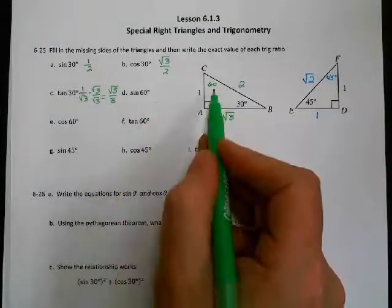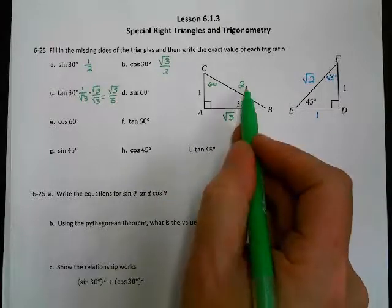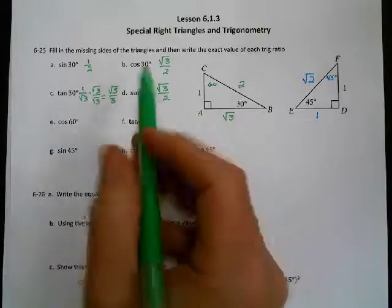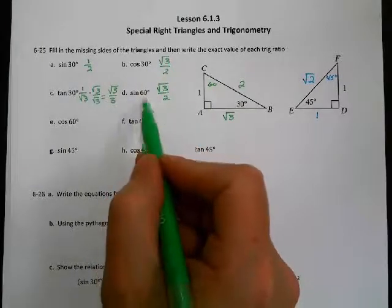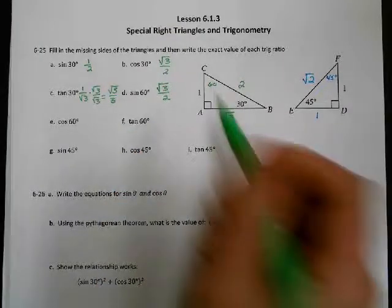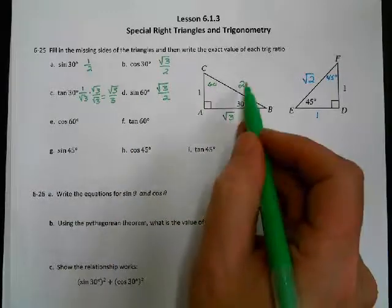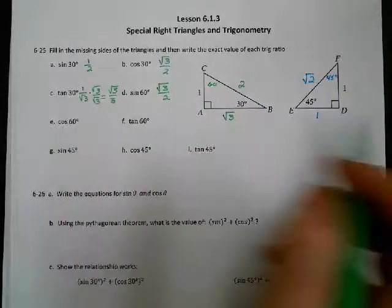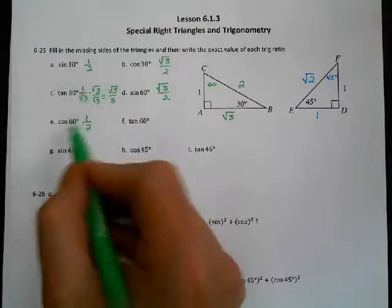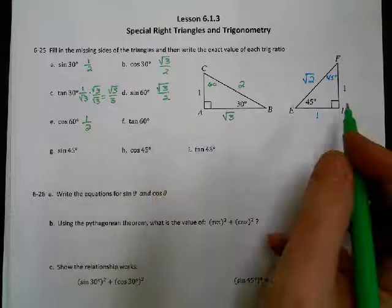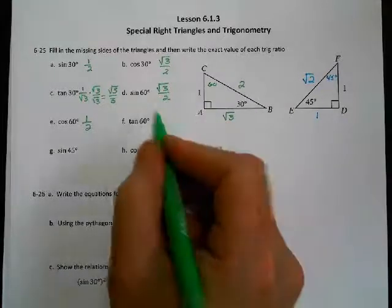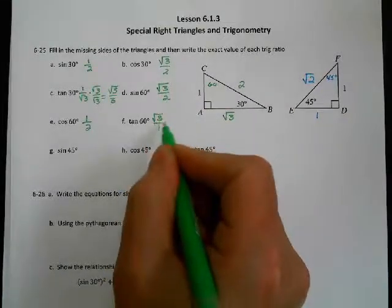For the 60-degree angle, sine of 60 is opposite over hypotenuse, which is root 3 over 2. Notice that the cosine of 30 is equal to the sine of 60 — these complementary angles always swap like that. Cosine of 60 is adjacent over hypotenuse, which is 1 over 2. So the sine of 30 equals the cosine of 60. Tangent of 60 is opposite over adjacent, which is root 3 over 1, or just root 3.